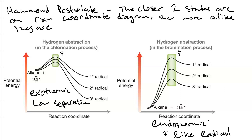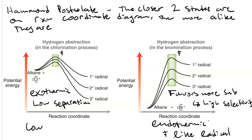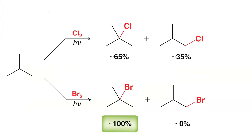So we get a high degree of selectivity with bromination, whereas with chlorination, because the first step is exothermic, we have low selectivity. If we have 2-methylpropane as our substrate and subject it to chlorination, 65% goes through a tertiary radical and 35% goes through a primary radical — the tertiary is the major product, but it's like pouring 3.5 gallons on the ground and only putting 6.5 gallons in your tank. On the other hand, since bromination is so selective, we get 100% tertiary and 0% primary. This means bromination is the one we want when selectivity is an issue.